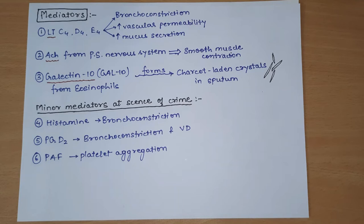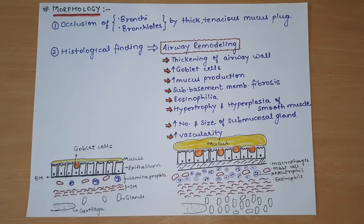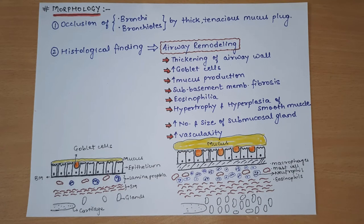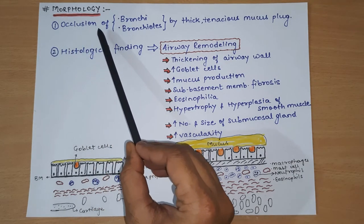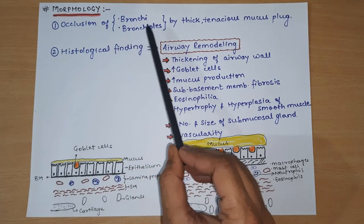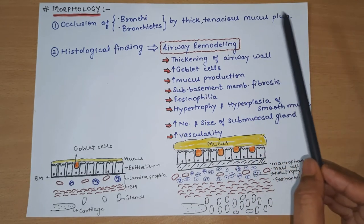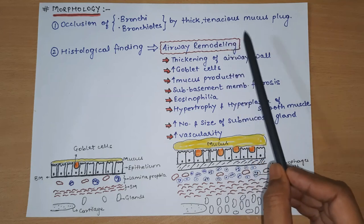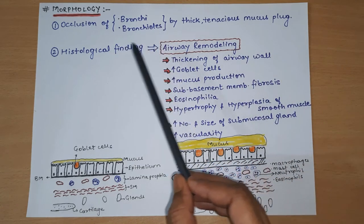Now we will discuss the morphology of Bronchial Asthma. Morphology will be discussed in three points. First, when examined grossly, there will be occlusion of bronchi and bronchioles by thick tenacious mucous plugs - because mucous secretion is very high, thick tenacious mucous plug formation occurs, which occludes the bronchi and bronchioles.